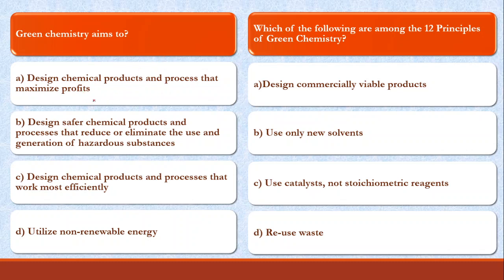First question: Green chemistry aims to design chemical products and processes that — maximize profit? No, that's not the concept. Design safer chemical products and processes that reduce or eliminate the use and generation of hazardous substances? Yes, I think this one. Design chemical products and processes that work most efficiently? Not always. Utilize non-renewable energy? Not always. So the correct answer is B.